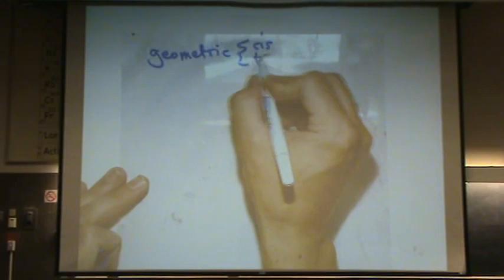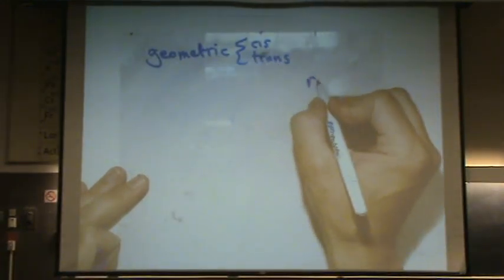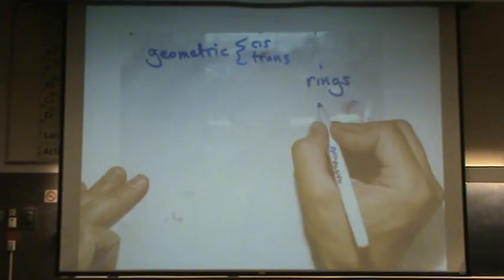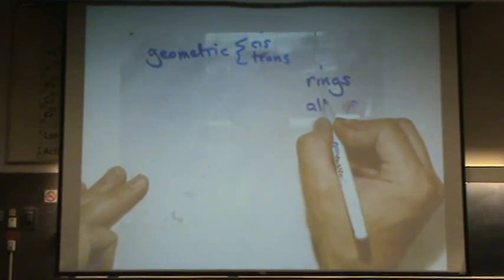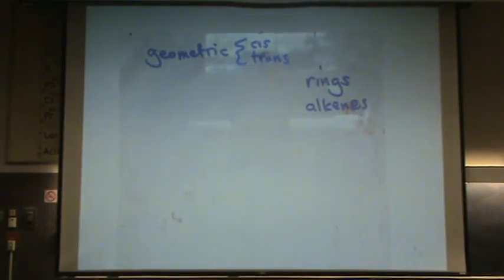Okay. That's the structural. You can also have geometric. So let's do a couple. Let me show you the geometric stuff. Now, this can come in two categories. Cis and trans, you'll see it on rings and alkenes.